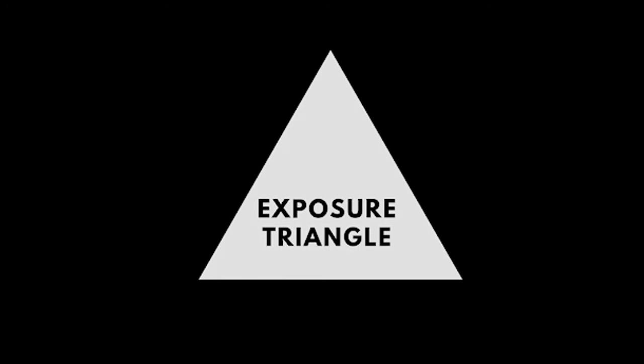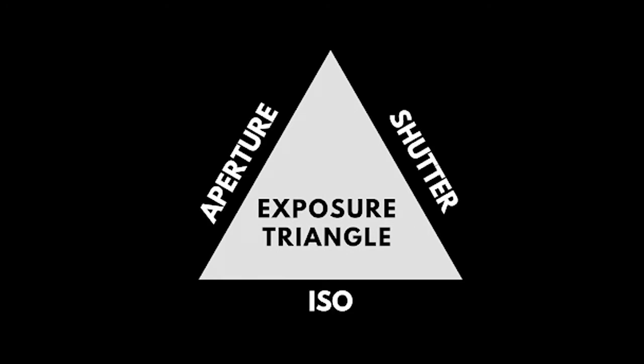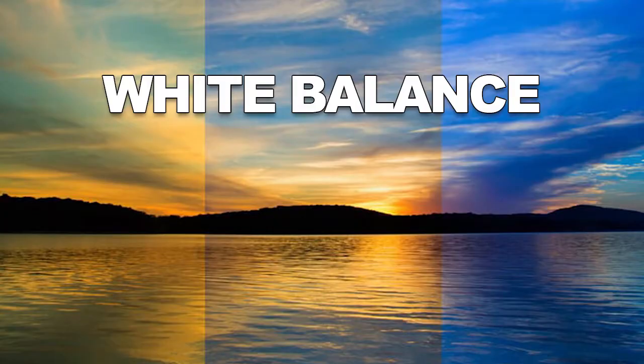The exposure triangle is made up of the first three — ISO, shutter speed, and aperture. All three of those elements decide how much light, and what strength that light will be, when it comes into your camera. White balance simply decides what color you're going to look at as white. How often have you taken a picture and everything looks greenish, bluish, or perhaps a little pinkish? That's because your white balance was off and the camera is not smart enough to know what should be considered white.